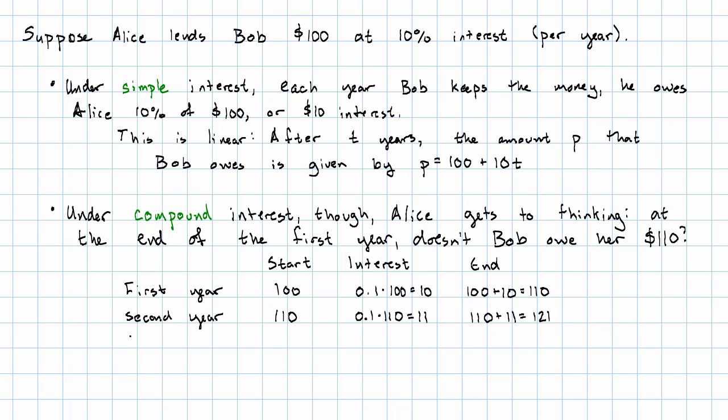Let's keep this going for one more year, and we'll see the pattern. At the start of the third year, he owes $121. That year, the interest he builds up is $12.10. And so at the end of the year, he owes $121 plus $12.10 is $133.10.